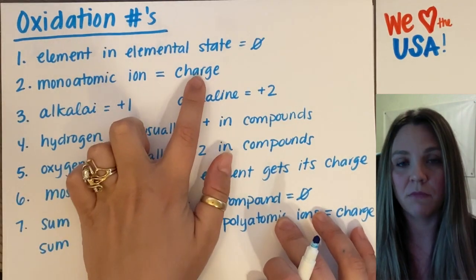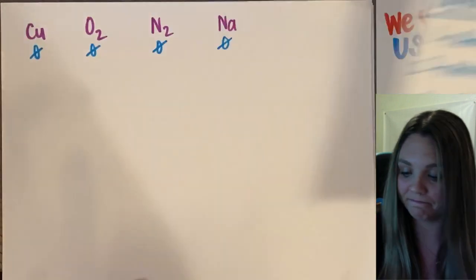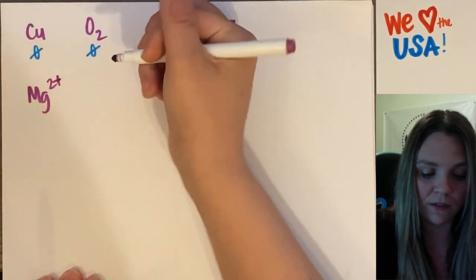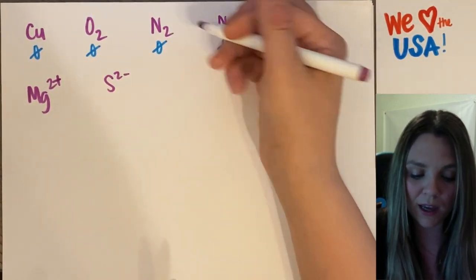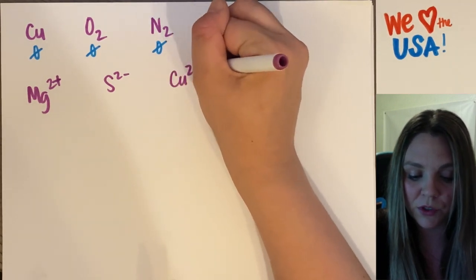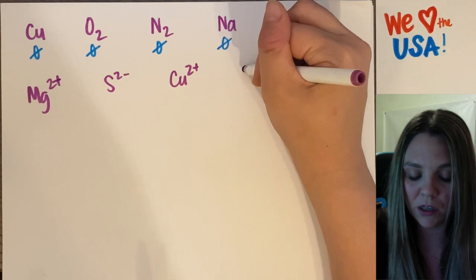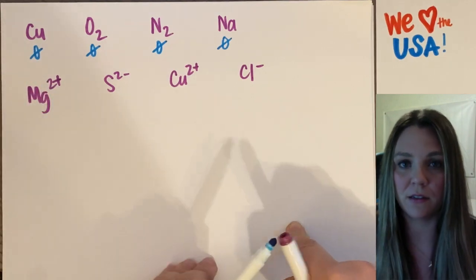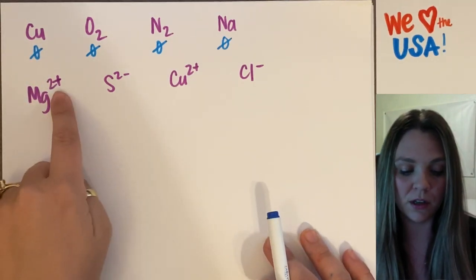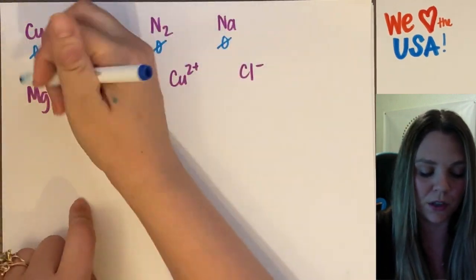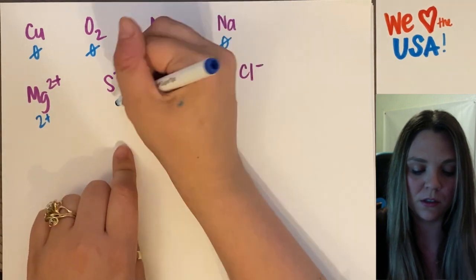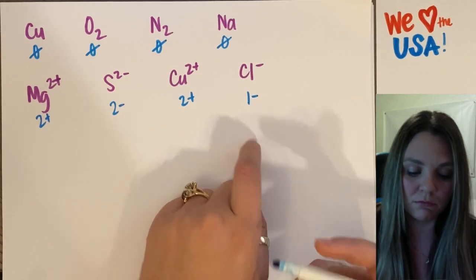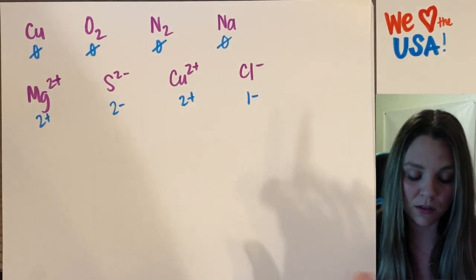Rule number two: monoatomic ions have the oxidation number of their charge. So if I had the magnesium ion, the sulfide ion, copper two plus, or chlorine minus — any monoatomic ion gets the oxidation number of their charge. Magnesium has a two plus charge, so it gets a two plus oxidation number. Sulfur gets a two minus, copper gets a two plus, chlorine gets a one minus.